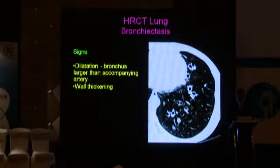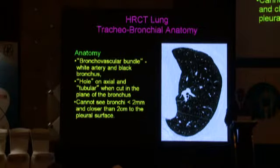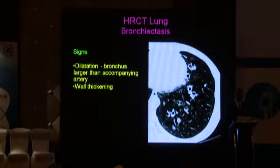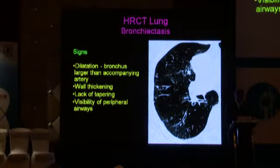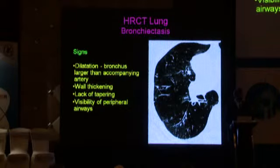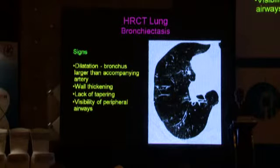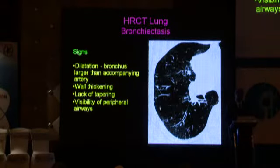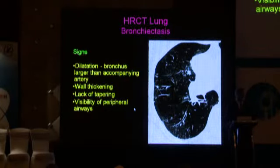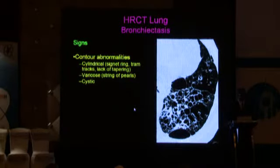If there is a perceptible wall thickening — normally there is an imperceptible or minimally thin wall — then that goes hand-in-hand with bronchiectasis. The lack of tapering is another sign: normally the daughter bronchus should be smaller than the parent bronchus. If the daughter bronchus is the same size, that means bronchiolectasis or bronchiectasis. Dilated bronchi or bronchioles in the last 2 centimeters of the lungs also imply bronchiectasis.